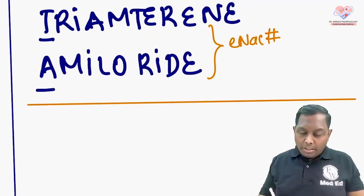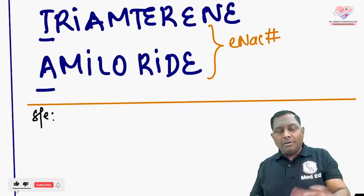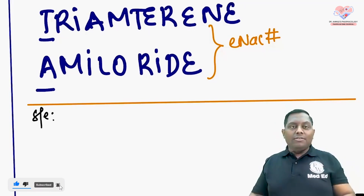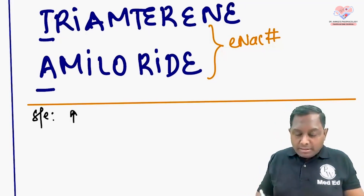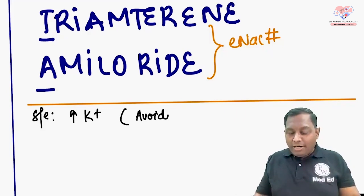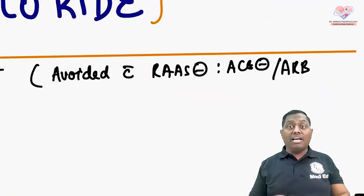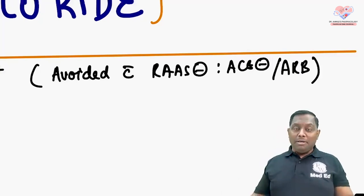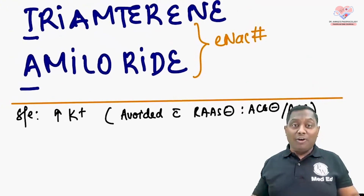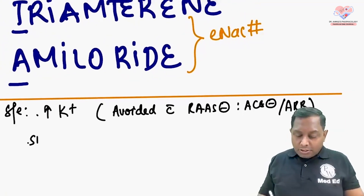Potassium-sparing diuretics are often added with other diuretics because all other diuretics cause loss of potassium, while potassium-sparing diuretics preserve it. They can increase the risk of hyperkalemia, and therefore should be avoided with RAS system inhibitors — ACE inhibitors and ARBs — which also cause hyperkalemia.